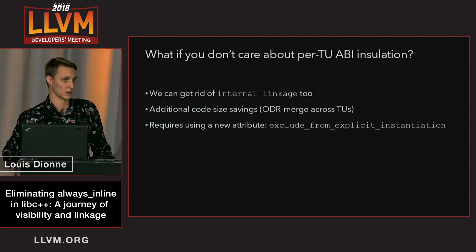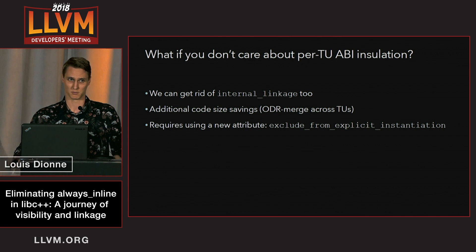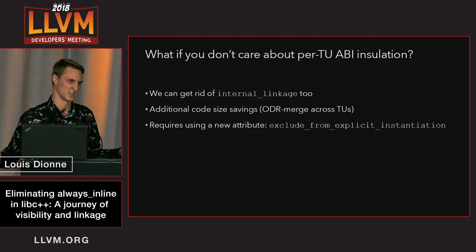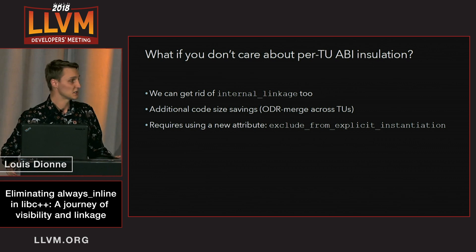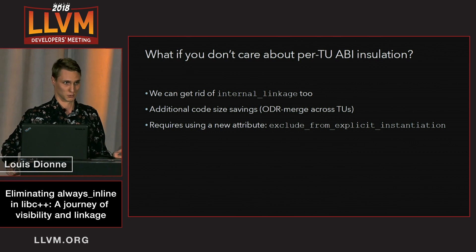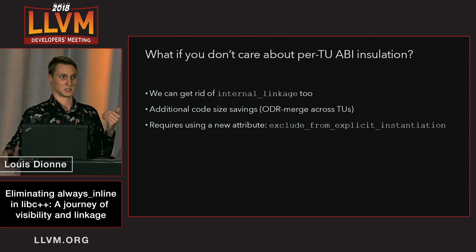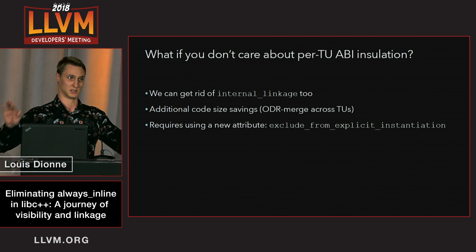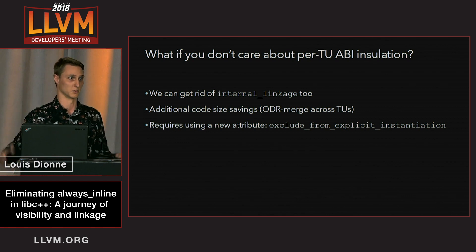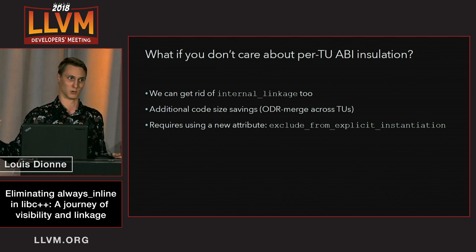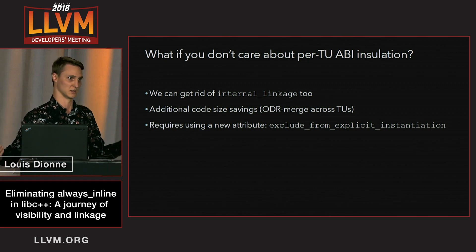A lot of people actually don't care about linking translation units built with different versions of libc++. That's kind of a pretty weird use case. In these cases, we can get rid of the internal_linkage attribute as well, and the benefit is additional code size savings because then we can do ODR deduplication across translation units — inline functions get merged and there's only one definition in the final executable.